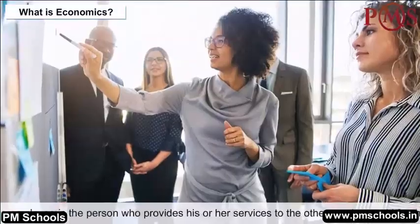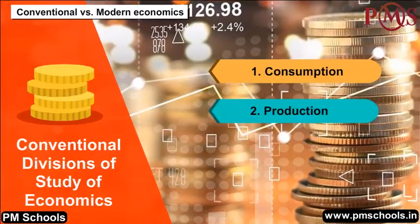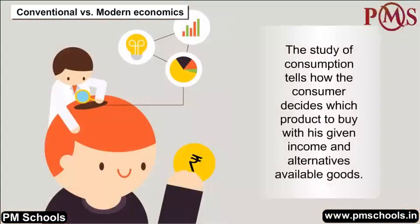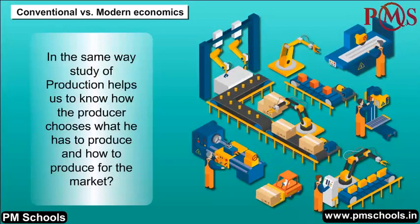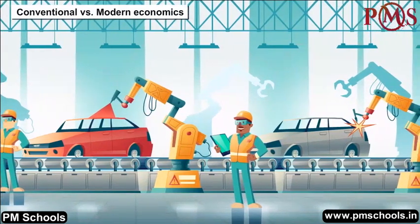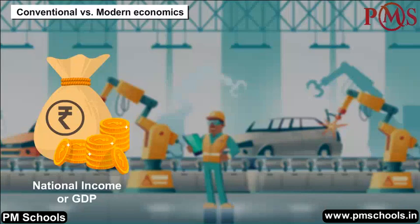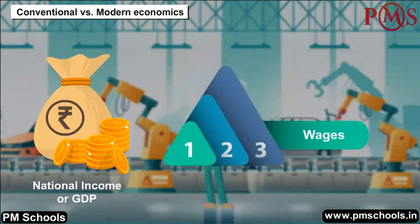The employee is the person who provides services to others and gets paid for that. Conventional vs. Modern Economics: The conventional study of consumption tells how the consumer decides which product to buy with his given income and alternatives available. The study of production helps us know how the producer chooses what to produce and how to produce for the market. The study of distribution helps us know how national income or GDP is distributed through wages, profits, and interests.